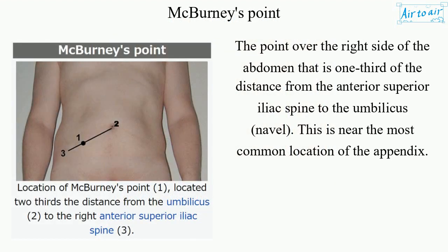McBurnie's Point is the point over the right side of the abdomen that is one-third of the distance from the anterior superior iliac spine to the umbilicus, or navel. This is near the most common location of the appendix.